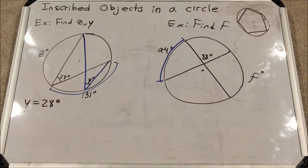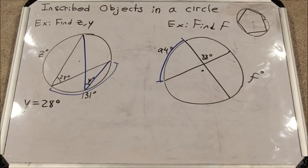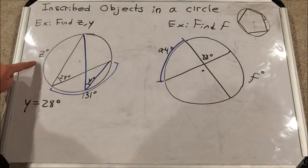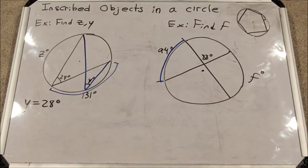Well, as you can see, y is inscribing the same arc, this unnamed arc right here, as this 28 degree inscribed angle is. So that means y must be 28 degrees. Yes, it's that simple. Two angles that are inscribed that intercept the same arc will have the same measure. Now, in order to find z, we're gonna need to do a little more work.